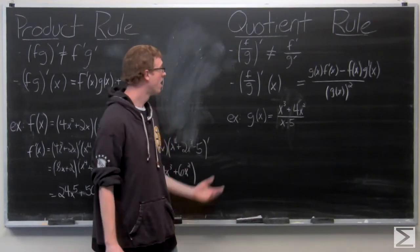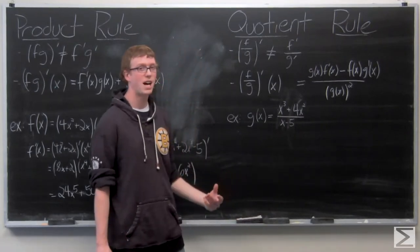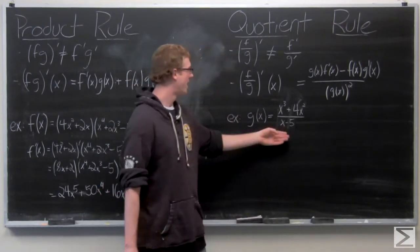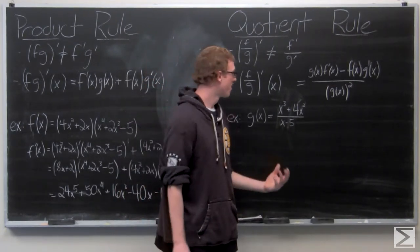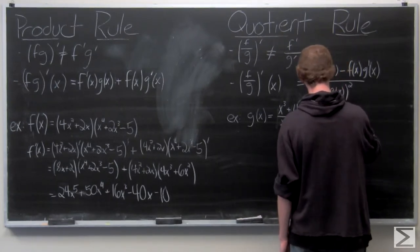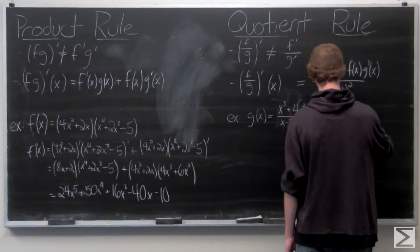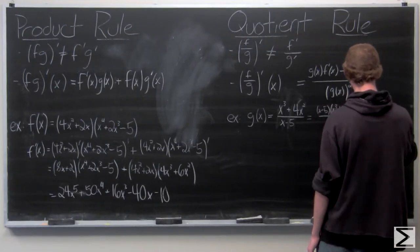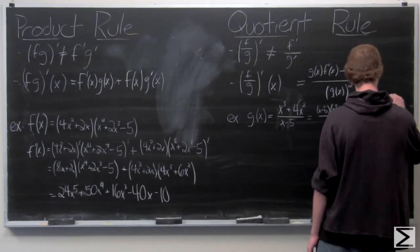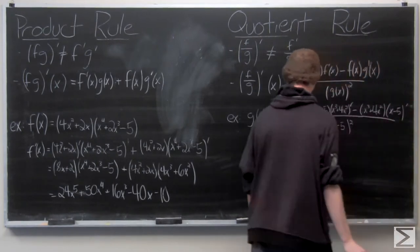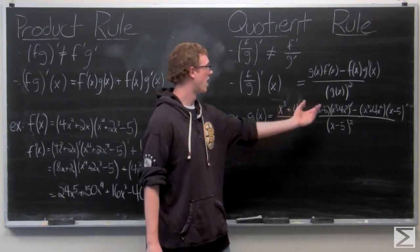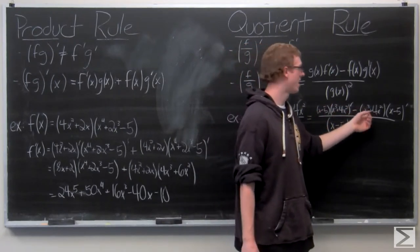We're going to go ahead and use the quotient rule on our next example. Note that you could put the denominator on top as a negative exponent and use the product rule instead — we'll leave that as an exercise. Applying the quotient rule, we have x minus 5 in the denominator squared, and in the numerator: (x minus 5) times the derivative of the original numerator, minus the original numerator times the derivative of (x minus 5).